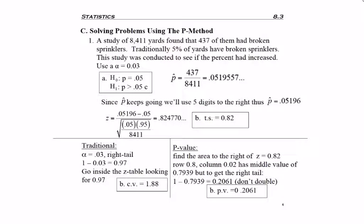So instead of starting in the middle of the z table, I start on the edge of the z table. And so when I go to row 0.8 underneath 0.02, I find in the middle this time the value 0.7939.